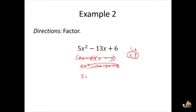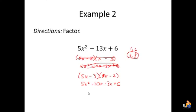Let's try them switched: (5x minus 3)(x minus 2). FOILing this out: 5x squared, 5x times negative 2 is negative 10x, negative 3 times x is minus 3x, and negative 3 times negative 2 is plus 6. The sum of the middle terms is negative 13x. This checks — so this is the right answer.